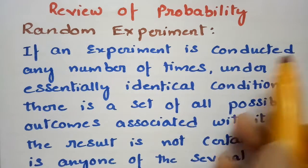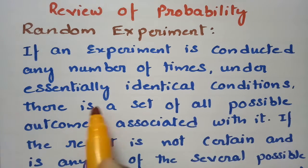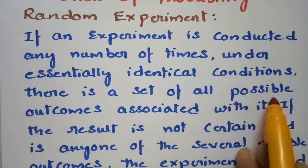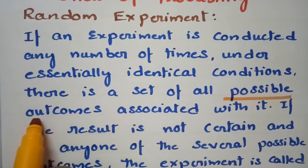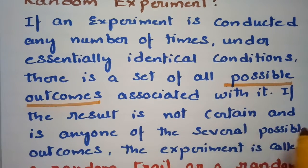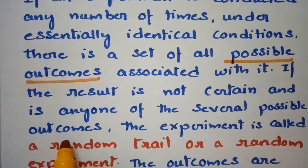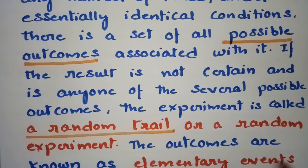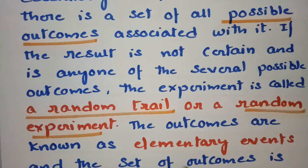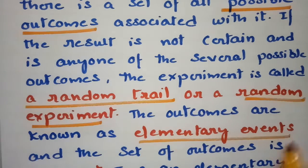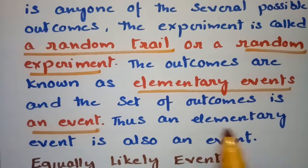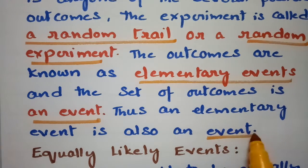If an experiment is conducted any number of times under essentially identical conditions, then there is a set of possible outcomes associated with it. If the result is not certain and is any one of the several possible outcomes, the experiment is called a random trial or a random experiment. The outcomes are known as elementary events and the set of outcomes is an event. Thus an elementary event is also an event.